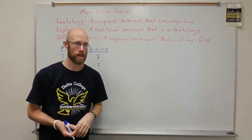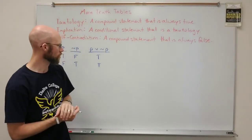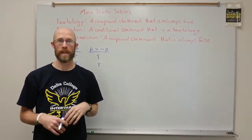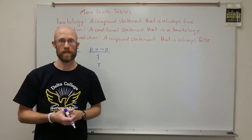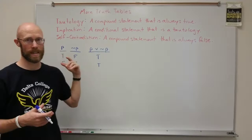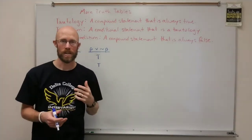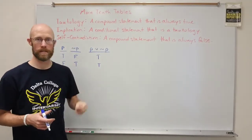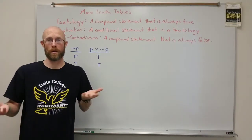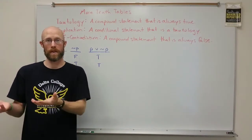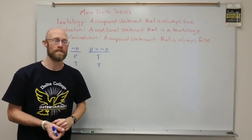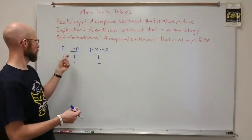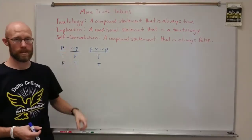That's like saying: I'm either at Delta College or not at Delta College, right? If P is 'being at Delta College,' I'm either at Delta or I'm not at Delta. Well, that's definitely true no matter what — no matter where I am, I'm either there or I'm not. So that would be a tautology: a disjunction with a statement and its negation.